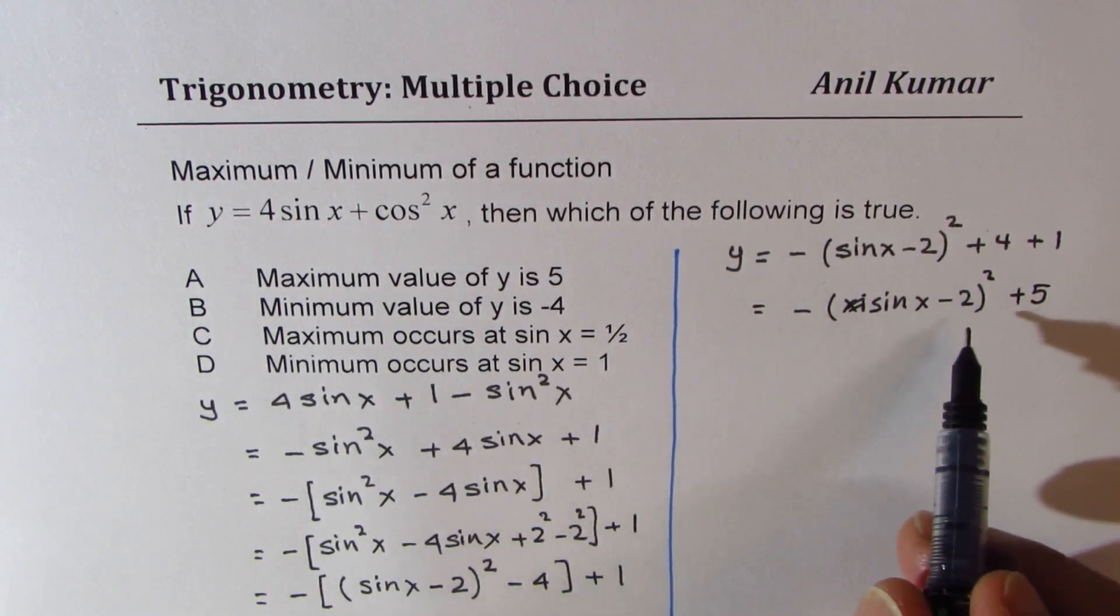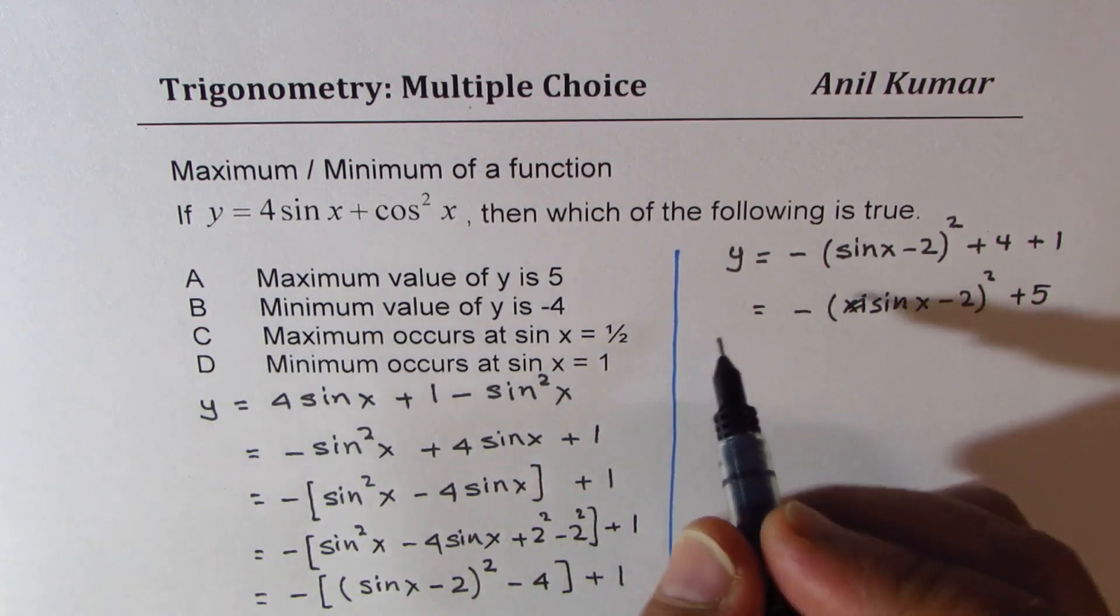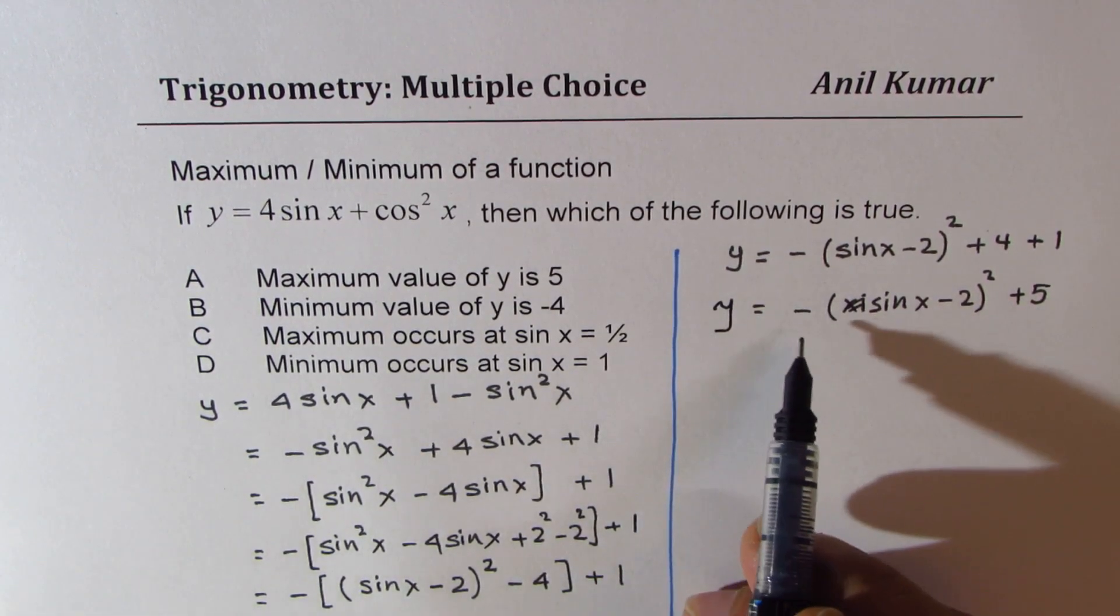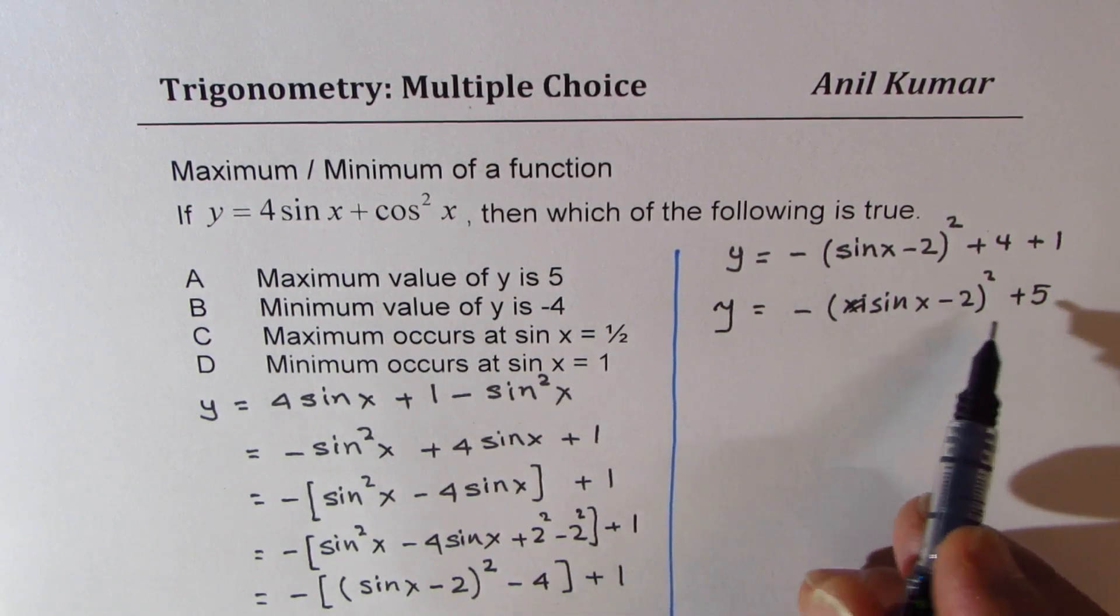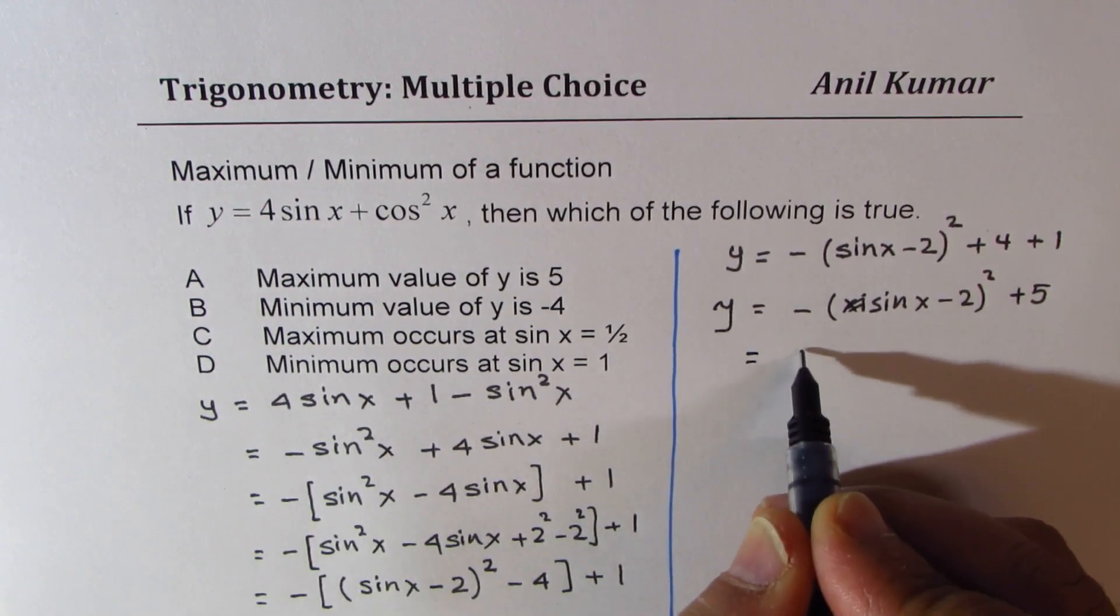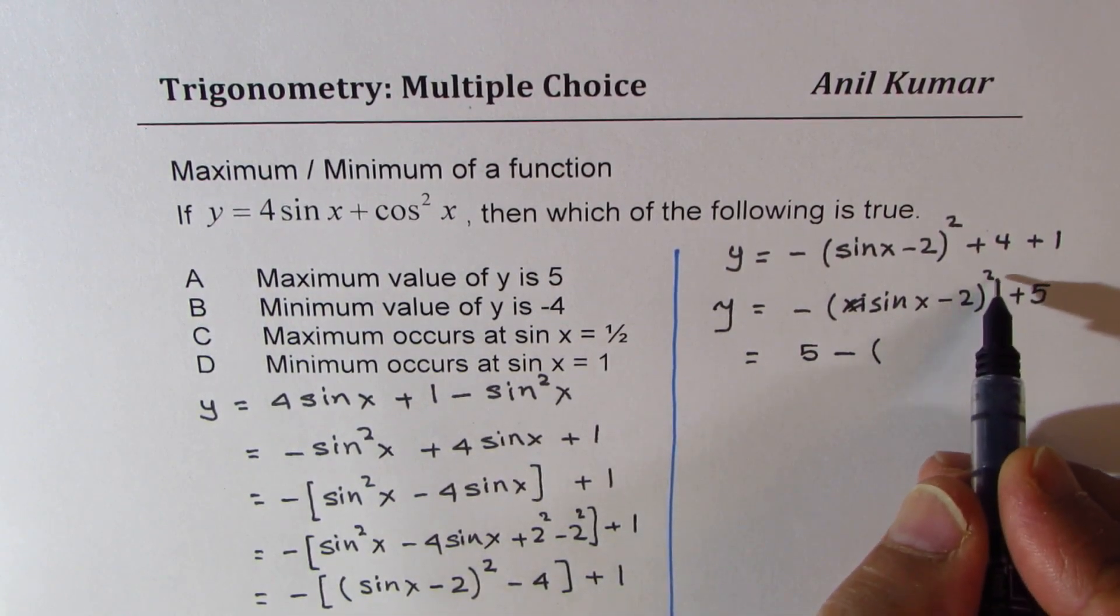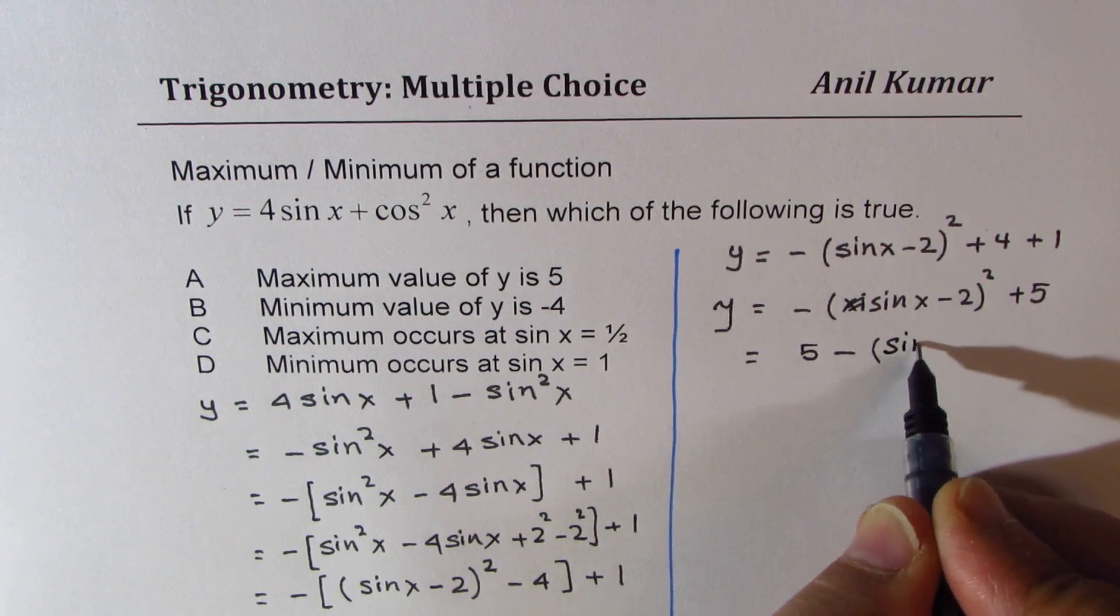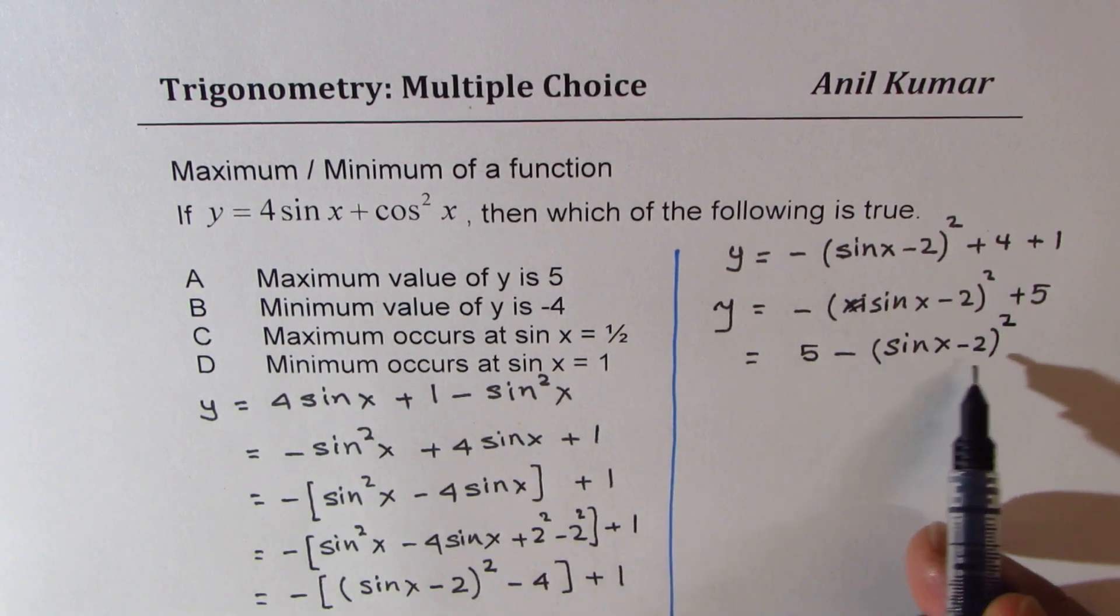So this will remind you of a kind of a parabola. Now, if you have this function y equals minus sin x minus 2 whole squared plus 5, think like this. We could write this as 5 minus something. And that something is positive since it is square. Sine x minus 2 whole squared. So this something is positive.